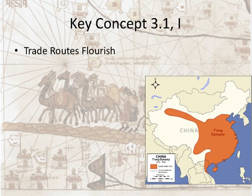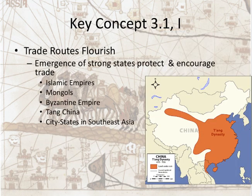In addition to new technologies and new ideas, you also see the emergence of new states that help protect and encourage trade. These include, but are not limited to, the Islamic empires, the Mongols, the Byzantine empires — especially in their city of Constantinople — Tang China, which was instrumental in protecting the Silk Road, and city-states in Southeast Asia and East Africa.